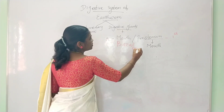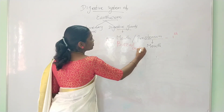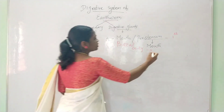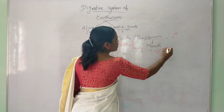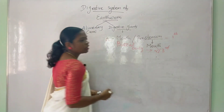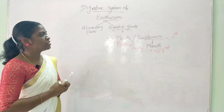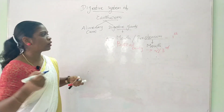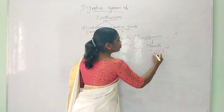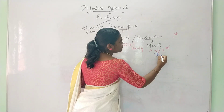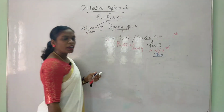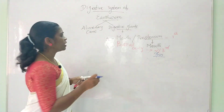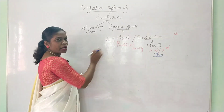The Buccal cavity is located in the second and third segments. The Buccal cavity is very thin in structure. Followed by the Buccal cavity is the next structure.